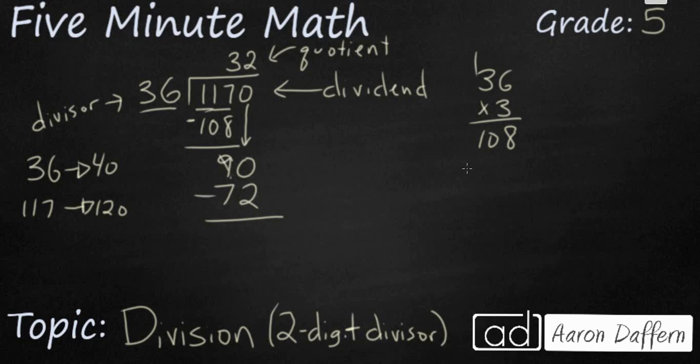I'm going to need to regroup here. Looks like I have a remainder of 18 now. My remainder of 18 is smaller than my 36. So that is good.